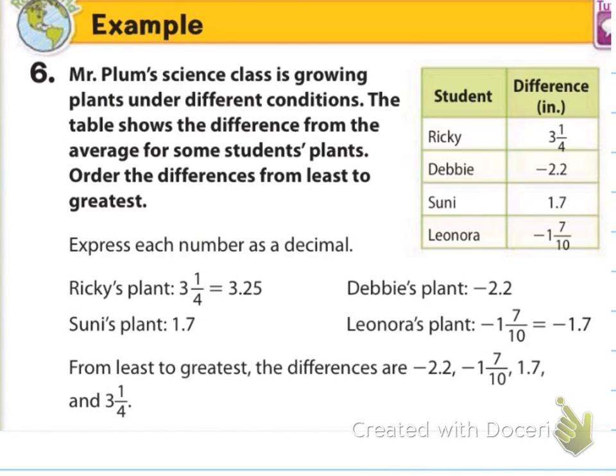So number 6, Mr. Plum's science class is growing plants under different conditions. The table shows the difference from the average for some students' plants. Order the differences from least to greatest. So we've got Ricky, who has a difference of 3 and one-fourth. Debbie, who went negative 2.2. Suni, or Sunny, went 1.7 positive. And Lenora went negative 1 and 7 tenths.